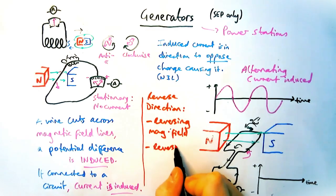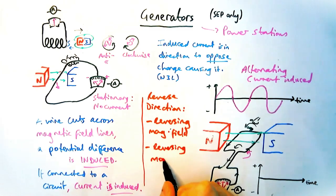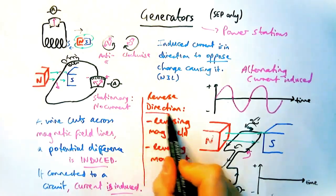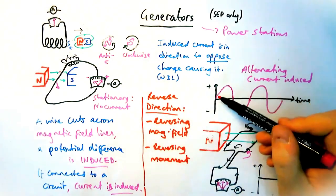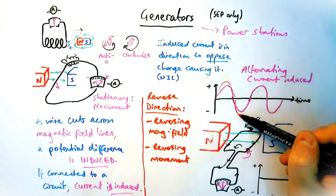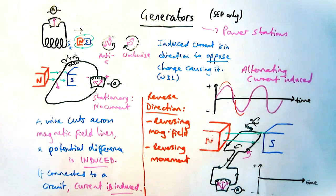If instead of reversing it, I wanted to increase the potential difference, so have a greater voltage or a greater current induced, I could do two things. Instead of reversing the magnetic field, I could make it stronger, so a stronger magnet means a greater PD,